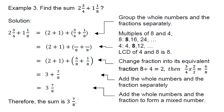Next, how do we add mixed numbers? A mixed number has both a fraction and a whole number. For example: find the sum of 2 and 3/4 plus 1 and 1/8. The whole number of the first is 2 and its fraction is 3/4. When a whole number and fraction are combined, that is called a mixed number. Set up: 2 and 3/4 plus 1 and 1/8. Add whole numbers and fractions separately: 2 plus 1, and 3/4 plus 1/8.